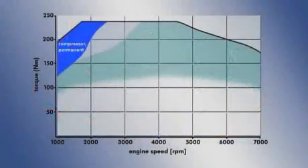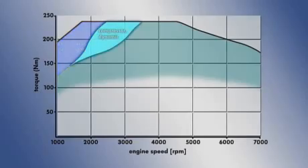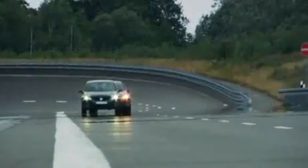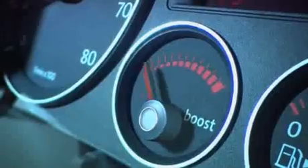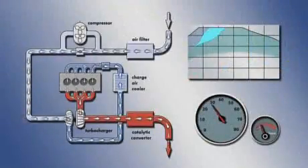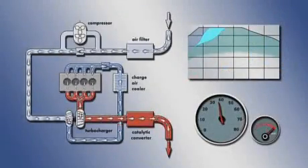In dynamic compressor operation, the automatic charge pressure control system determines, depending on the power demand, whether to activate the compressor or whether the turbocharger alone can supply the required charge pressure. If the charge pressure from the turbocharger is sufficient, the control flap opens and allows the direct passage of air to the turbocharger.